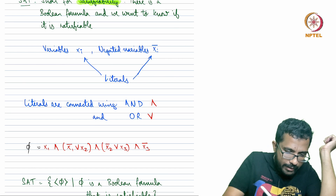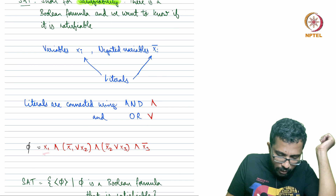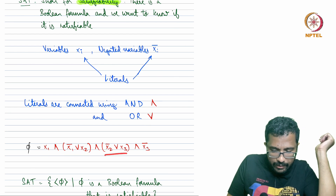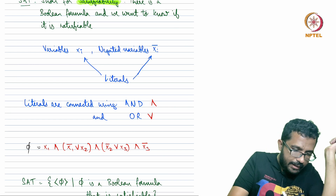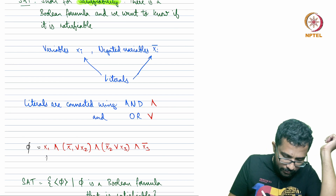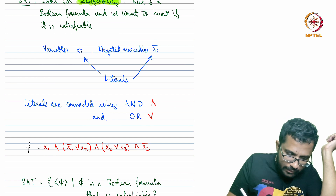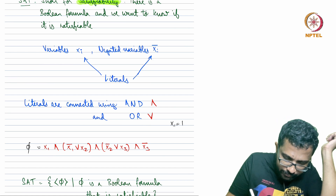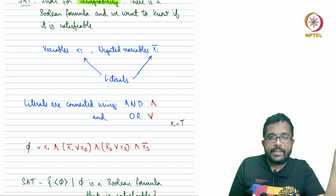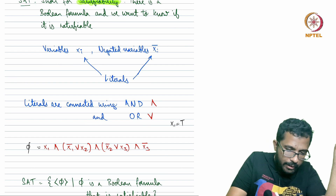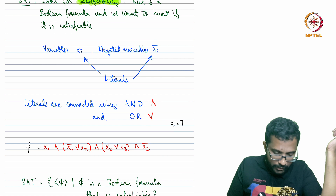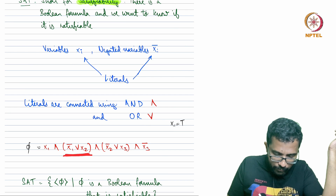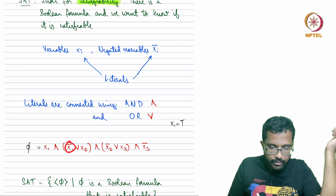The four clauses are: x1, then x1 complement OR x2, then x2 complement OR x3, and then x3 complement. Since it is an AND of four things, x1 must be true — otherwise the whole thing is false. But if x1 is true, then x1 complement is false.